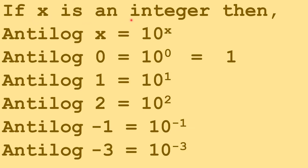If x is an integer, then anti-log x equals 10 raised to the power x. Therefore, anti-log 0 equals 10 raised to the power 0, which is 1. Similarly, anti-log 1 equals 10 raised to the power 1, anti-log 2 equals 10 raised to the power 2, anti-log minus 1 equals 10 raised to the power minus 1, and anti-log minus 3 equals 10 raised to the power minus 3.